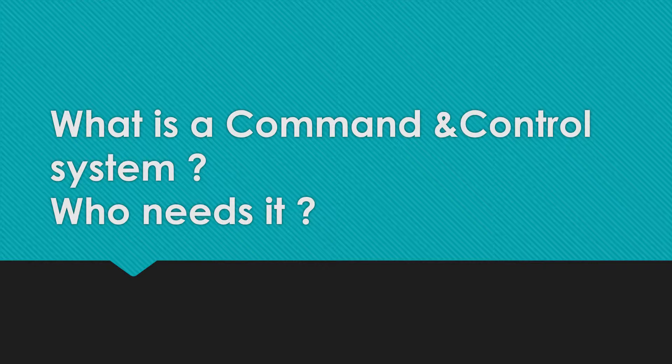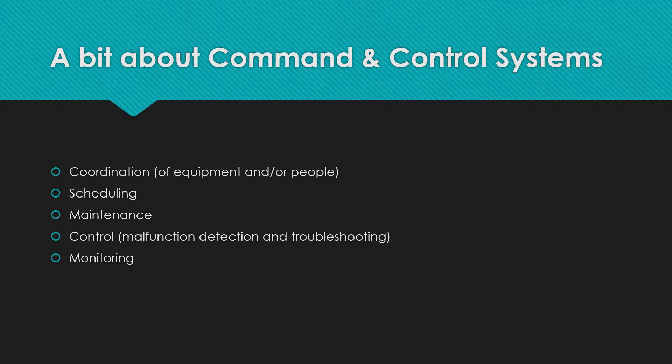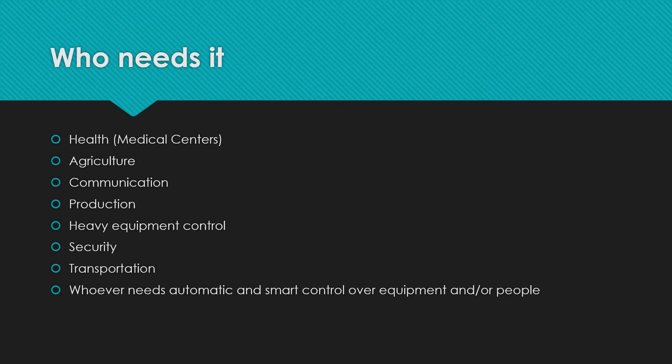In this short video we're going to talk about command and control systems — what are they and who may need them. A command and control system allows you to coordinate between different equipment and human resources. It allows you to schedule your activity automatically, maintain and control your equipment from an integrated console, detect malfunctions, troubleshoot different systems, and perform monitoring.